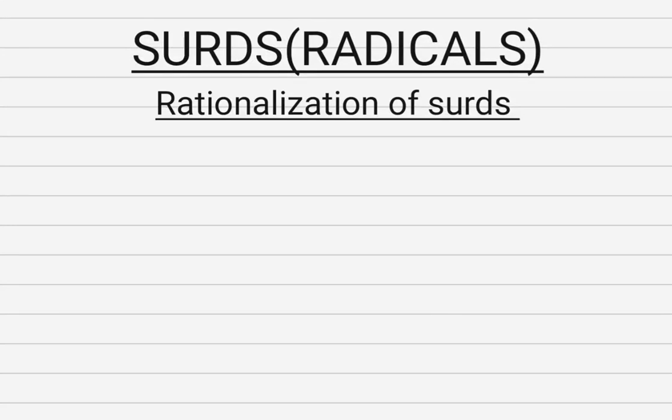Hi guys, today we are going to start with part 2 of surds, which is radicals. We are going to begin rationalization of surds. Rationalization of surds basically means changing the irrational denominator of a surd to a rational number. So let's move and start.